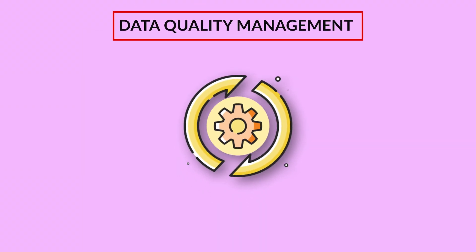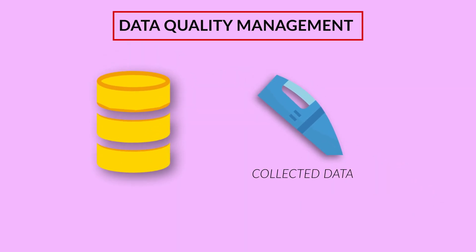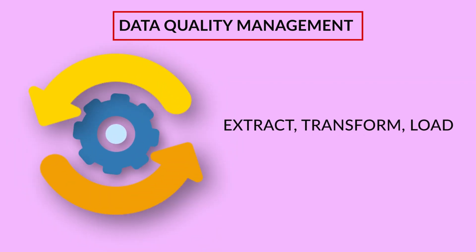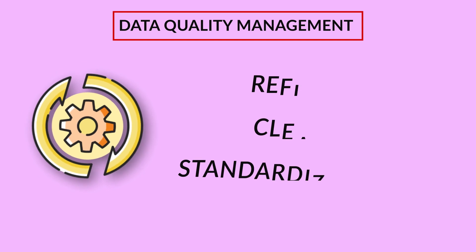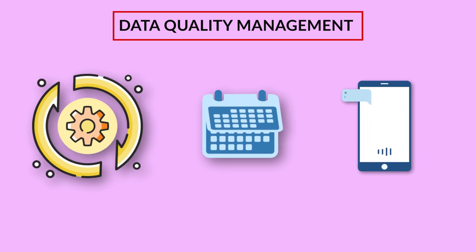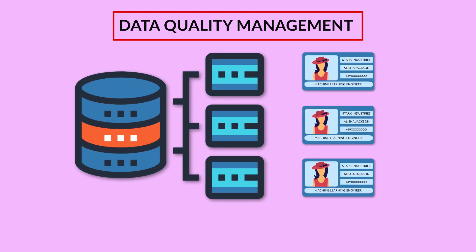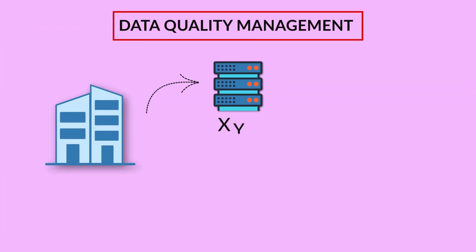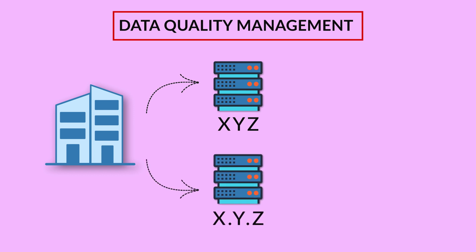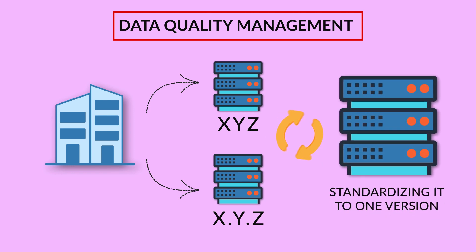Data Quality Management is concerned with cleaning a company's collected data, similar to how an ETL tool transforms data. DQM refines, cleans, and standardizes data, from formatting dates and phone numbers to ensuring that the names of customers and companies are represented uniformly across all databases, systems, and applications. For example, if a company is listed as XYZ in one system but as X.Y.Z in another, DQM would clean this inconsistency by standardizing it to one version.